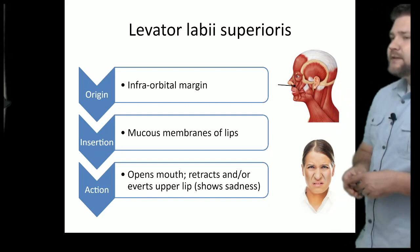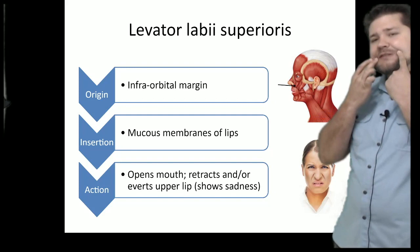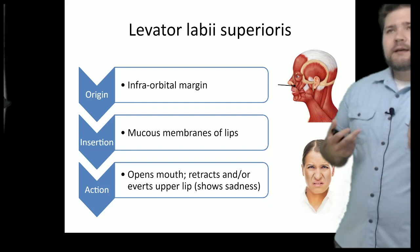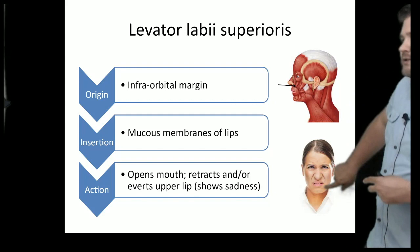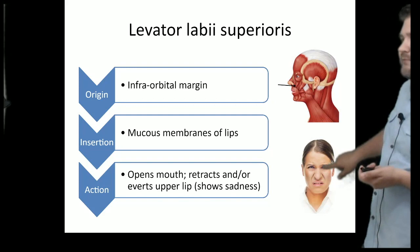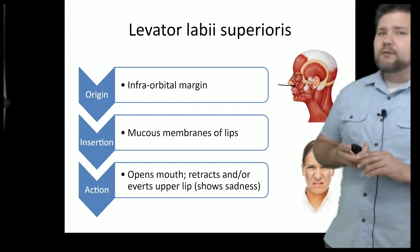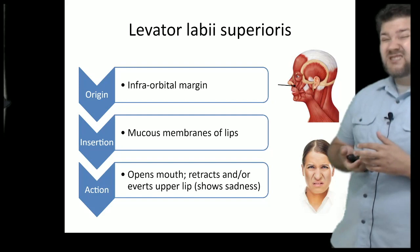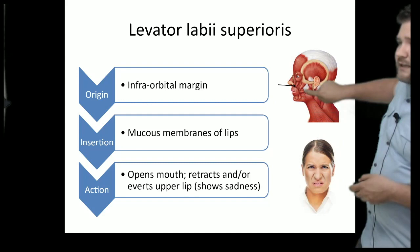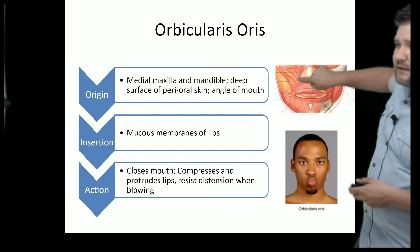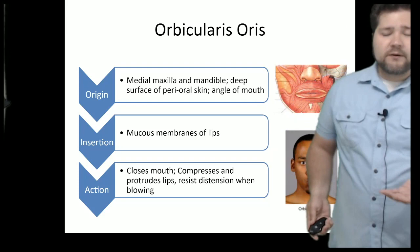The levator labii superioris doesn't help with smiling so much — it raises the central components of the upper lip, contributing to that disdainful look similar to the procerus. It works in conjunction with the procerus when you smell something unpleasant, like old food left in the fridge. You can see it just underneath the eye, approaching the midline — that's your levator labii superioris.